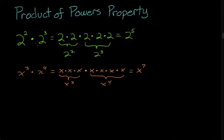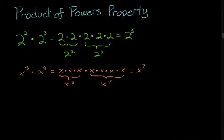So what relationship can we see emerging here? If you have two terms with like bases — in the first example the like bases were 2 — then what you can do is just add the exponents. So 2 squared times 2 cubed is going to be 2 to the 2 plus 3, or 2 to the 5th power. If you have x cubed times x to the 4th, that's going to be x to the 3 plus 4, which is x to the 7th power.